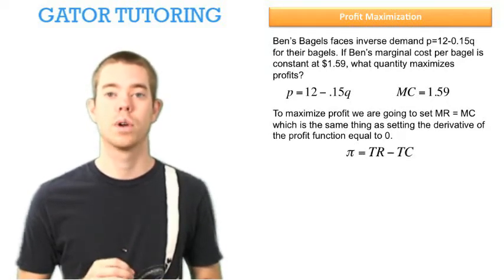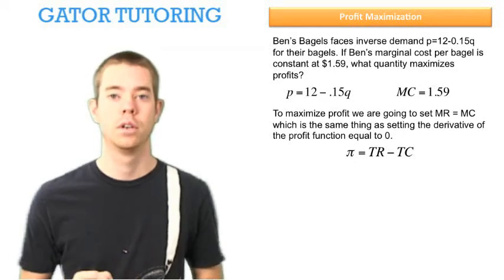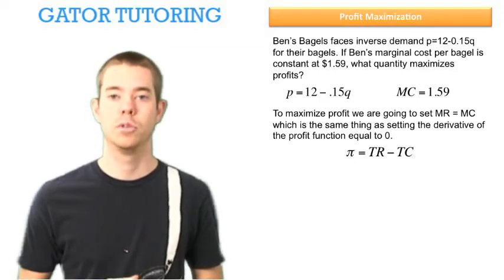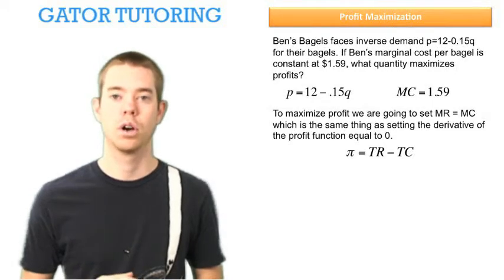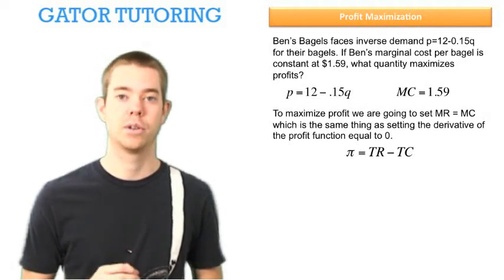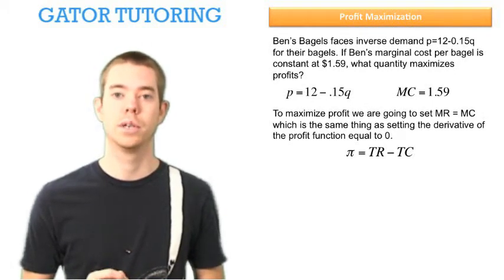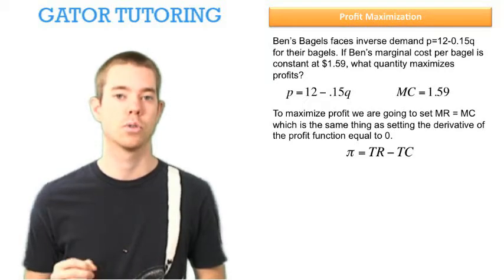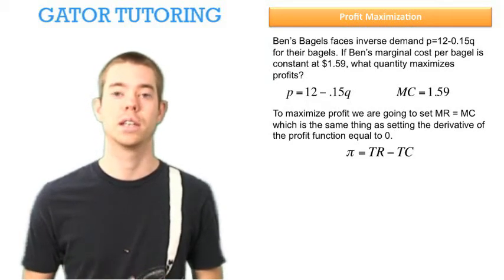Profit is equal to total revenue minus total cost. When we take the derivative of that, total revenue becomes marginal revenue, total cost becomes marginal cost, and we set that derivative equal to zero. So it'll be zero equals marginal revenue minus marginal cost, which is the same thing as setting them equal.